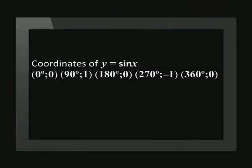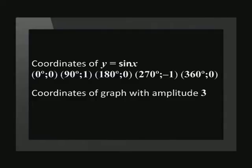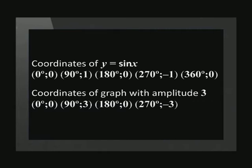Now let's change the amplitude of the standard sine graph to 3. We start by listing all the main coordinates for the standard sine function. The change in amplitude will only affect the y-value. We must multiply all the y-coordinates by 3. The new coordinates are: (0, 0), (90, 3), (180, 0), (270, -3), (360, 0).